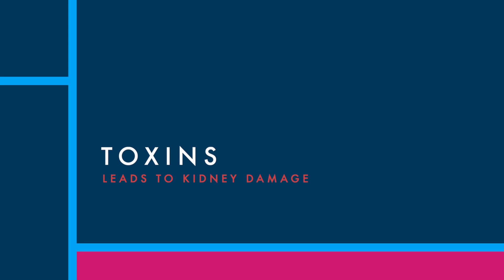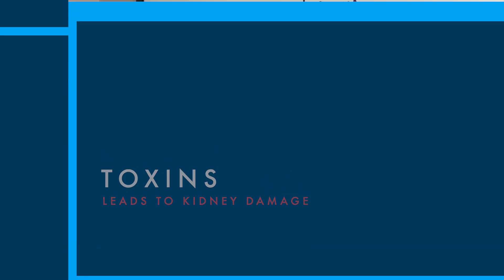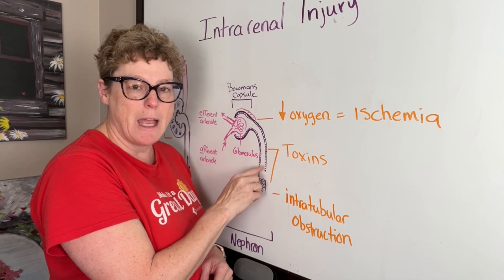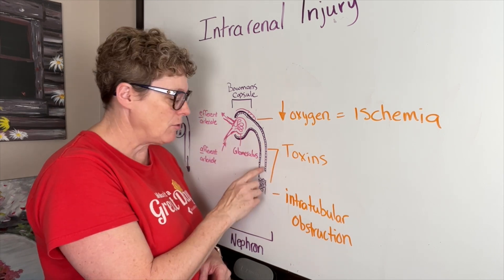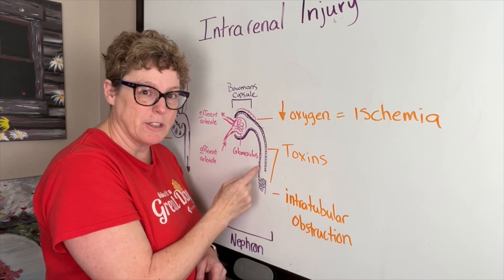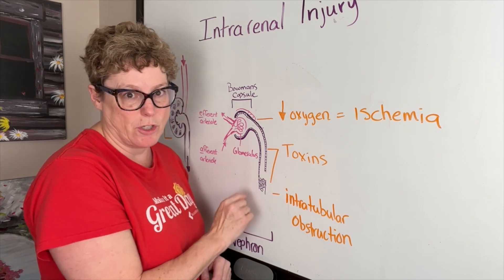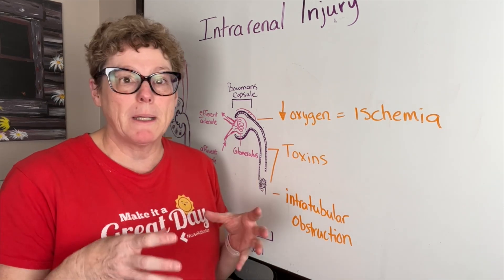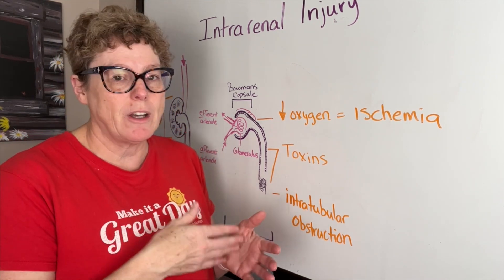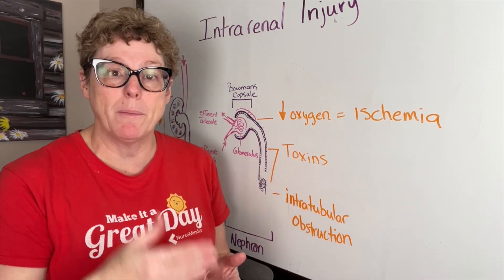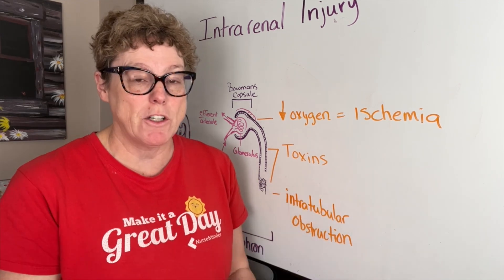The second category is toxins, which can also impact cell function. Toxins can cause damage to the tubule itself, causing leaking, and can cause epithelial cells to shed inward and create an obstruction. Some medications — always weighing pros and cons — are directly toxic to the kidneys, and we'll always be monitoring kidney function.